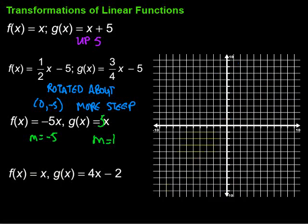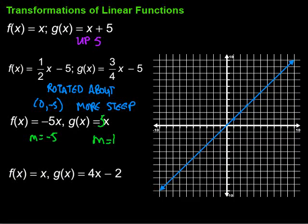For this last example, f of x equals x — we use slope of 1 starting at y-intercept of zero, sketch the points and draw the line. Then for g of x, we start at a y-intercept of negative 2, and use a slope of 4. That means up 4 over 1 to get additional points, or down 4 over 1.